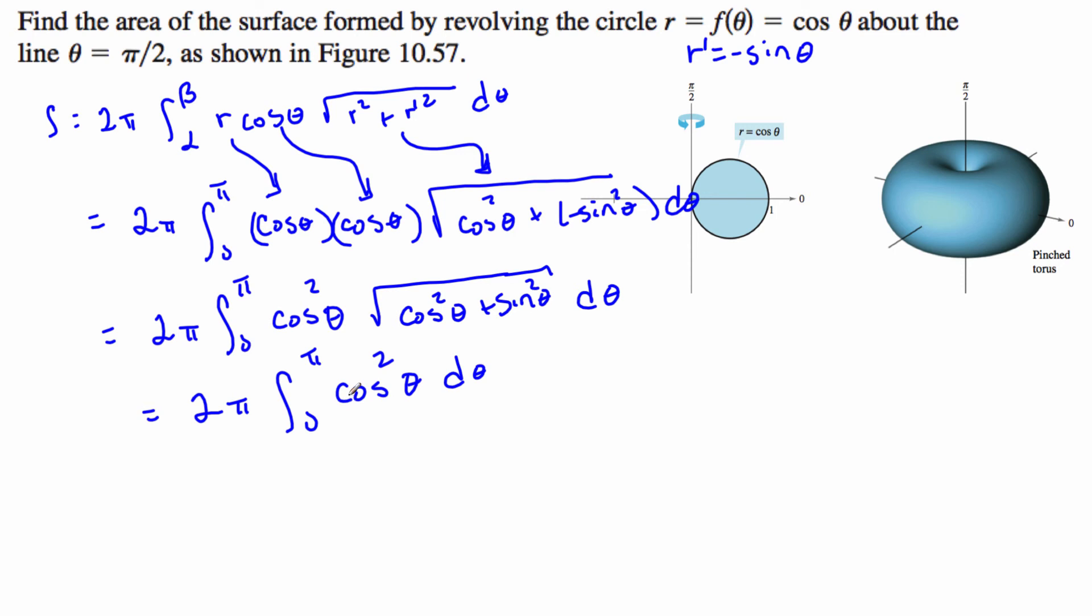Now I can't integrate cosine squared. I need to use the trig identity. This becomes π, the integral from 0 to π, of 1 + cos(2θ) dθ. And now when I do this integration, and I'm out of room, I see that I get an answer of π².